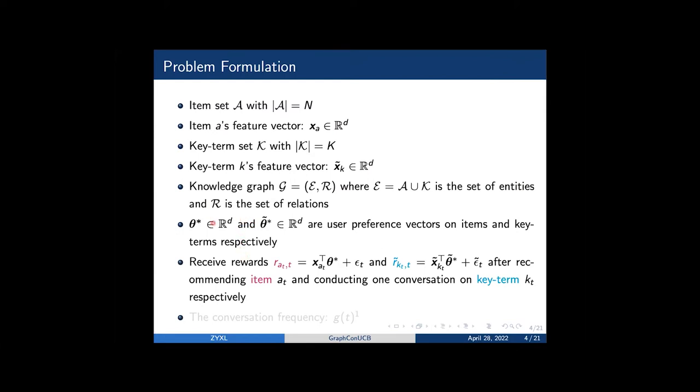We assume there is a linear structure over the user preference, both on item and key term levels. Specifically, we assume the agent will receive a reward rat equals the inner product of xat and c star plus tilted r kt equals the inner product of tilted zkt and tilded c star after recommending item a and conducting one conversation on key term kt.